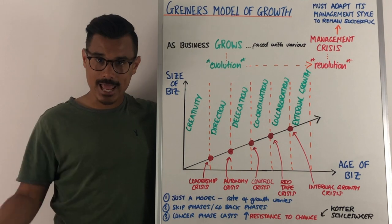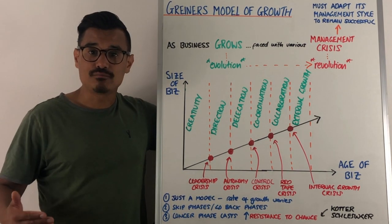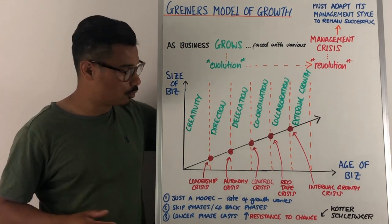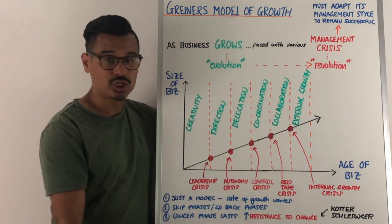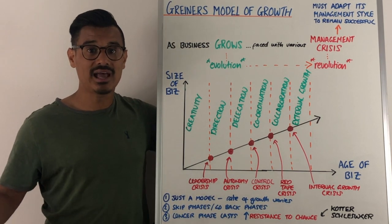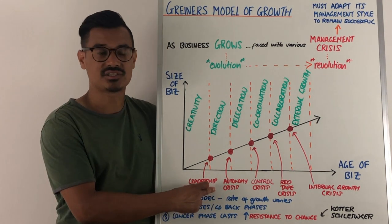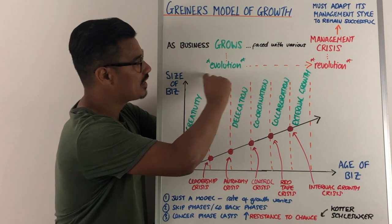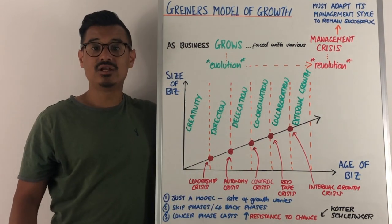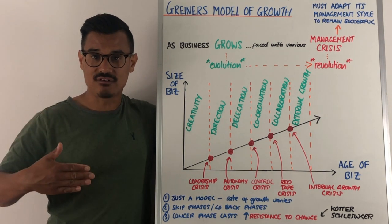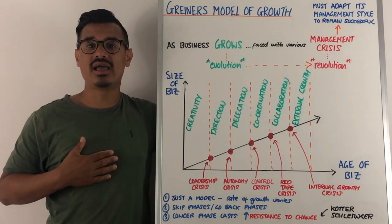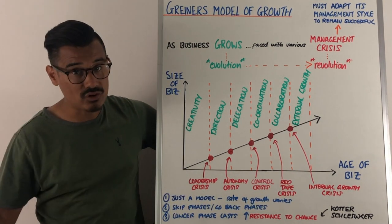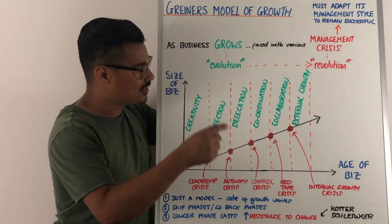The third evolutionary phase is delegation. The founders delegate decision-making to other employees, and middle managers may further delegate to their subordinates. This eventually leads to a control crisis, where founders again feel they've lost control. To address this, they move to the coordination phase, centralizing the structure, controlling finances from a central body, and putting formal procedures in place — but this eventually leads to too much bureaucracy.